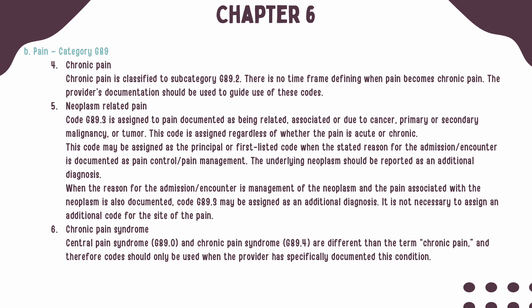There is no time frame defining when pain becomes chronic. When the provider's documentation states that the pain is chronic, then you can assign a code from Subcategory G89.2. When pain is documented as being related, associated with, or due to cancer of any kind, code G89.3 should be used. If the reason for the encounter is for pain control or pain management, assign G89.3 first, followed by the underlying neoplasm code. When the admission or encounter is for management of the neoplasm and the pain associated with that neoplasm is also documented, you will code first the neoplasm code, followed by G89.3.